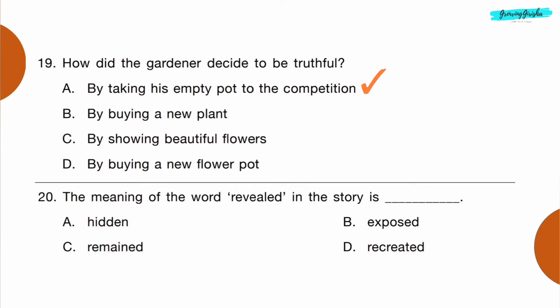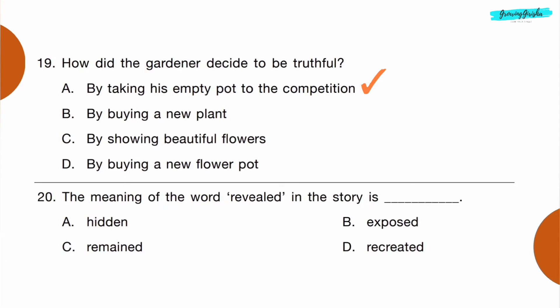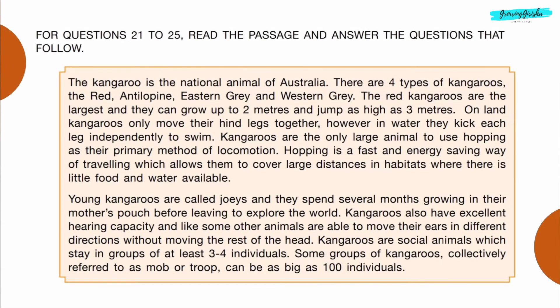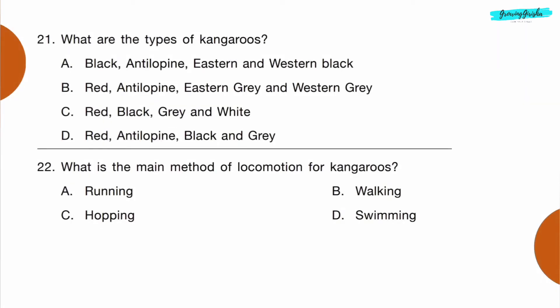Question 19: How did the gardener decide to be truthful? Option A: by taking his empty pot to the competition. Question 20: The meaning of the word 'revealed' in the story is dash. Option B: exposed.